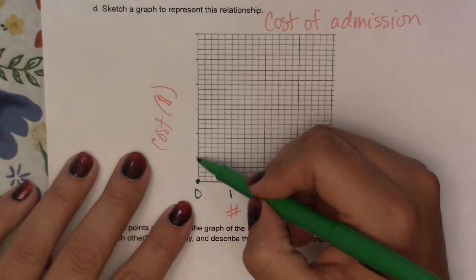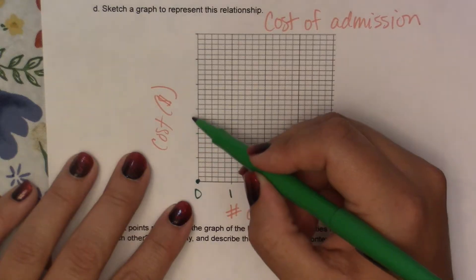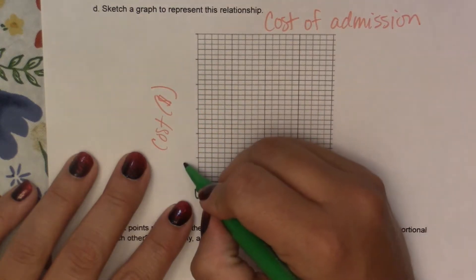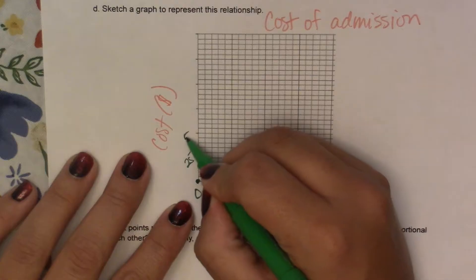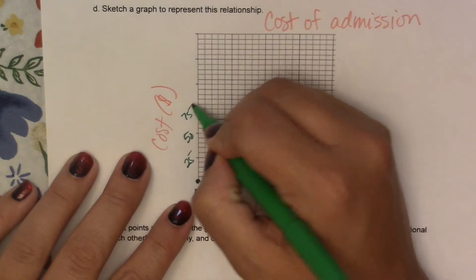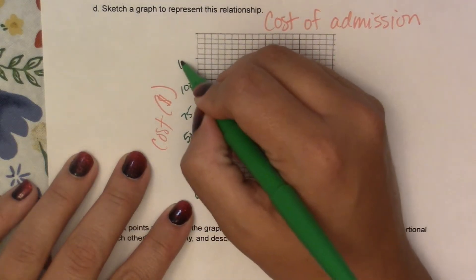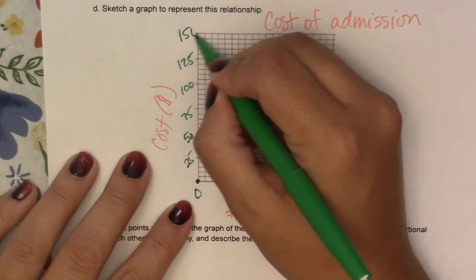I'm going to count by 25's. So 25, 50, 75, 100, 125, and 150.